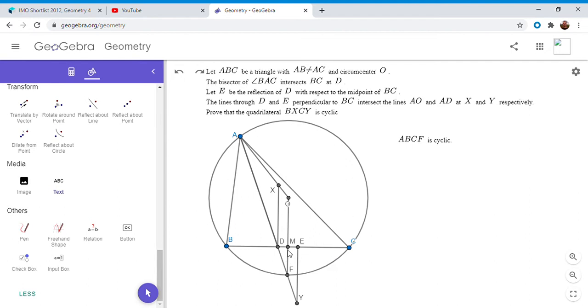And also, clearly, since MF and EY are both perpendicular to BC, they have to be parallel. And so since M is the midpoint of DE, F has to be the midpoint of DY.